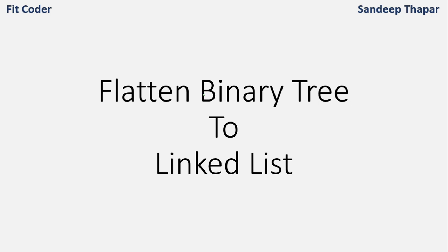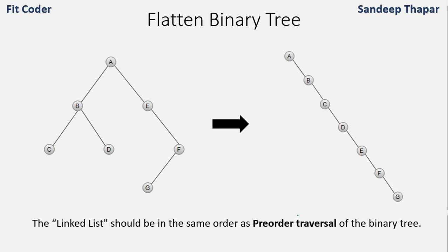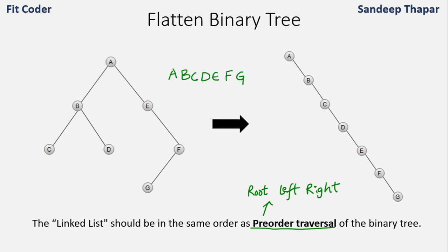In this video we will discuss how we can flatten a binary tree into a linked list. Given a binary tree, we have to convert it into a linked list where the order of the nodes is the same as the pre-order traversal. Pre-order traversal is root, left, then right. In the flattened tree all the left nodes are null. We'll discuss three methods to find an algorithm that flattens any binary tree.